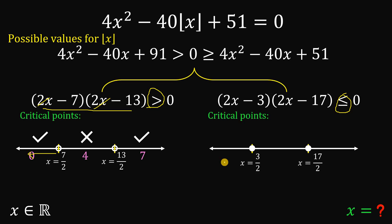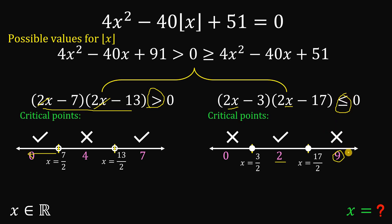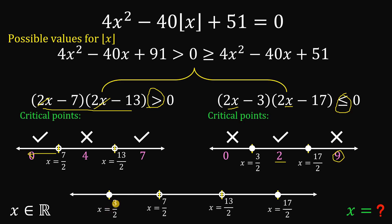For the second inequality, using test value 0 we get negative times negative — positive, which is not less than or equal to 0, so that region is not good. Test value 2 gives a negative number, which is less than or equal to 0 — good. Test value 9 (since 17/2 is 8.5) gives a positive number, not less than or equal to 0. Taking the intersection of both inequalities gives two valid regions: from 3/2 up to 7/2, and from 13/2 up to 17/2.